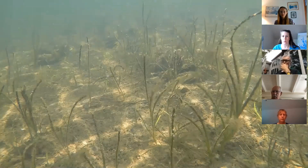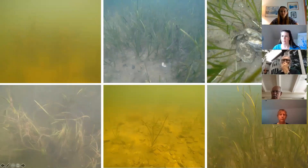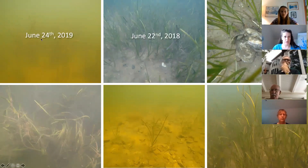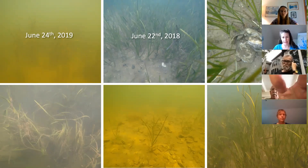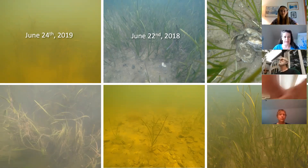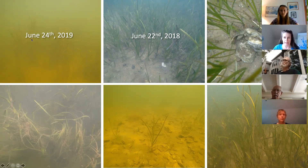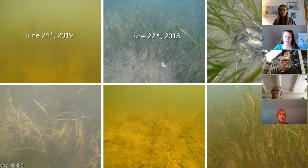Looking at two different years of the same pond — June 24th 2019 versus June 22nd 2018 — you can see a phytoplankton bloom reducing water clarity and the ability of light to reach the bottom. Right after this, we told the town we were really concerned about eelgrass health. They cut the pond, which was wonderful because it lowered the water and got the light to the eelgrass so we could maintain it.